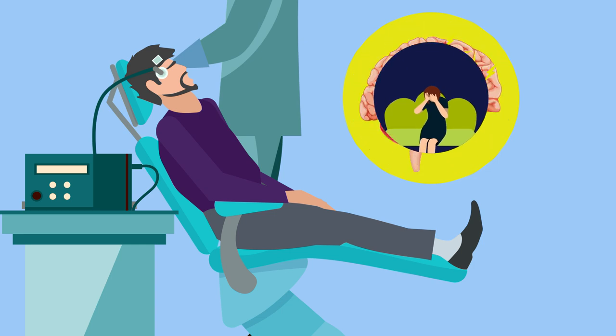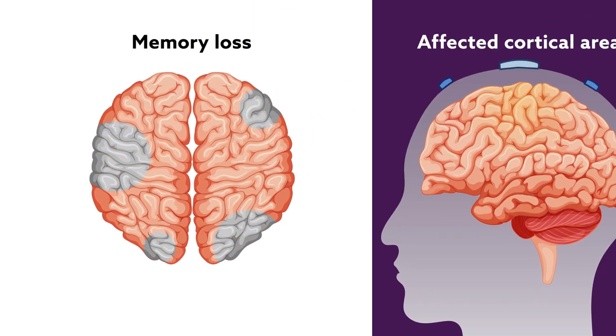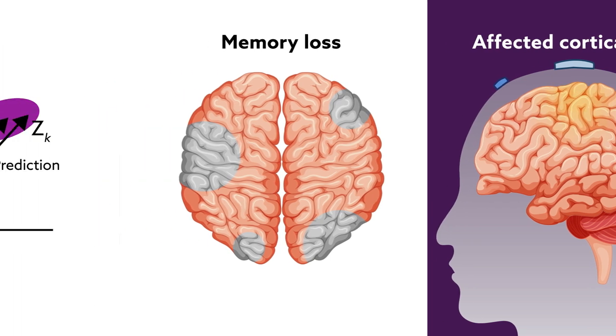But the procedure isn't perfect. One of the most troubling side effects is memory loss, a result of poor targeting. To be effective and safe, induced seizures should be restricted to the prefrontal cortex. But because the brain is an impossibly complex system of hardwired organic matter, it isn't always clear what areas are affected as seizures spread.